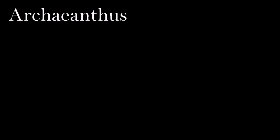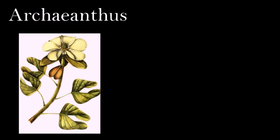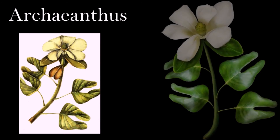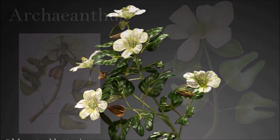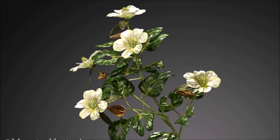Archaeanthus consisted of around 100 loosely packed, helically arranged, pea-pod-shaped follicles attached to a long central axis. The flower was borne at the tip of a branch with leaves in an alternate arrangement. Leaves associated with Archaeanthus had a prominent midrib and are called Liriophyllum. Archaeanthus flowers are very similar to those of modern Magnolia, which points to Archaeanthus as the earliest member of the family Magnoliaceae.